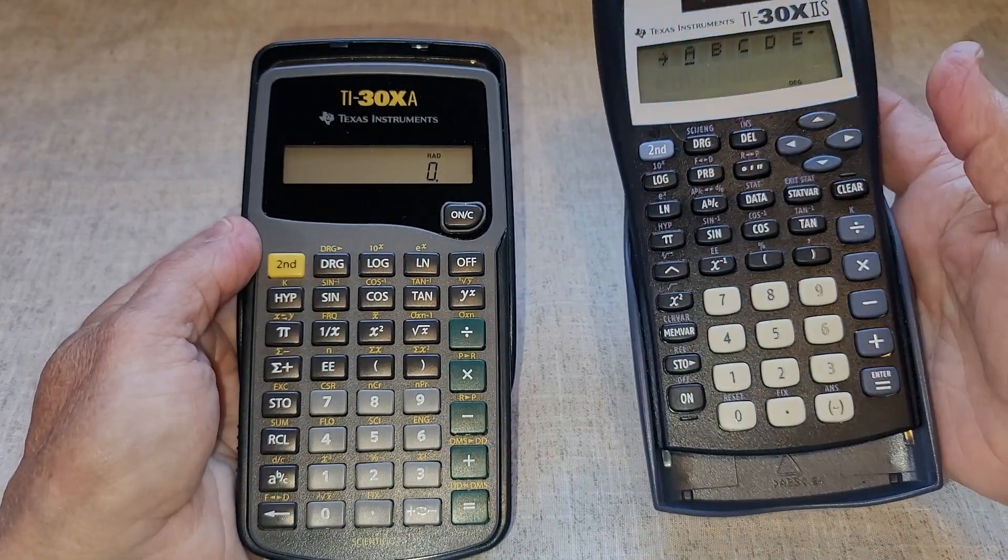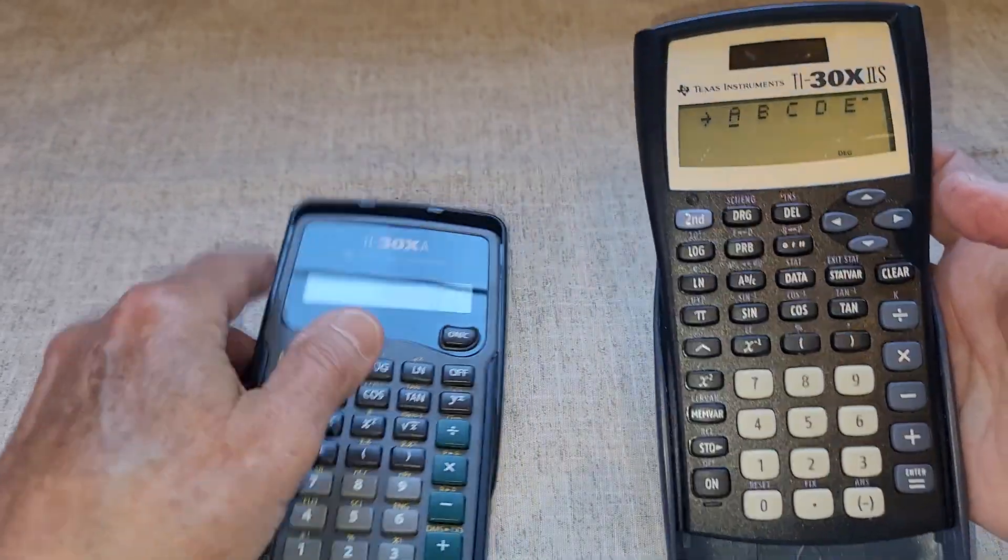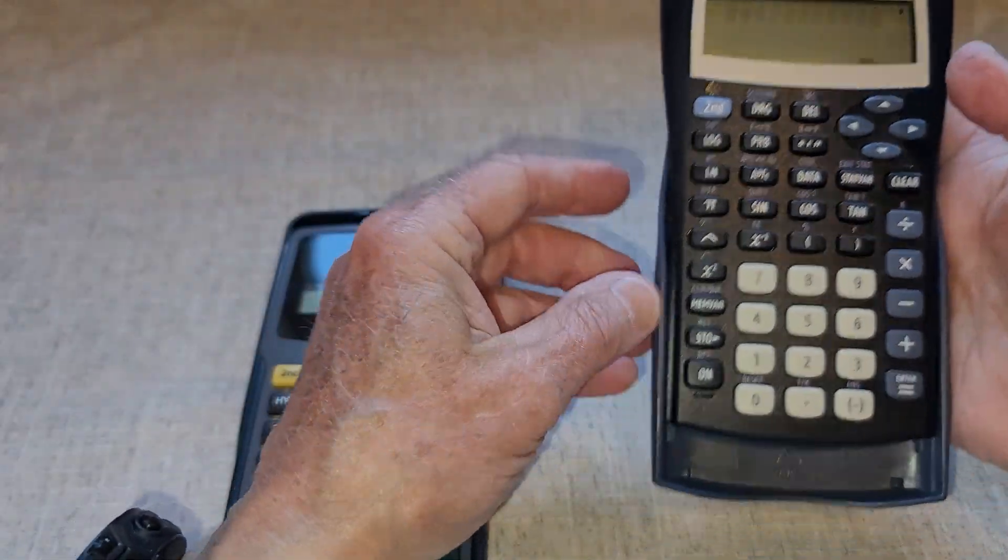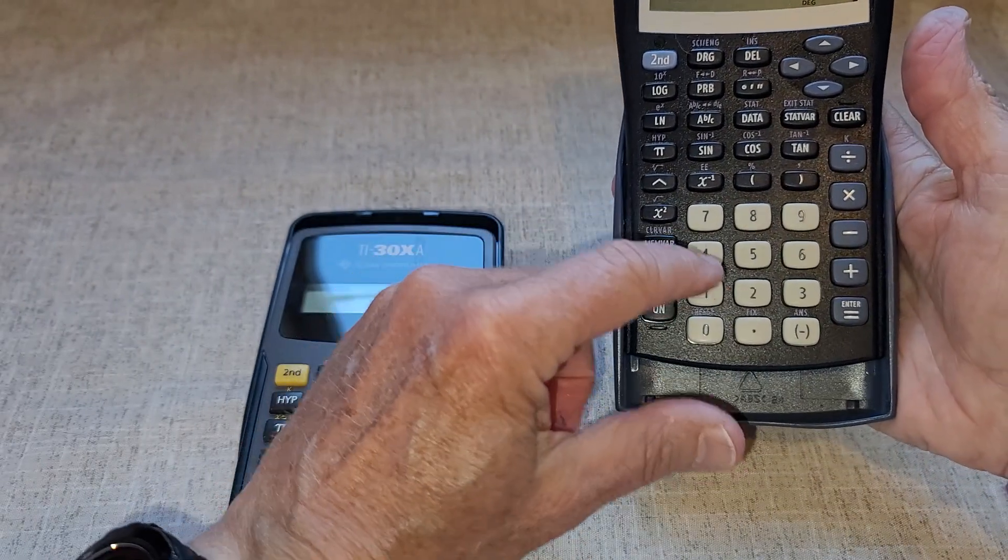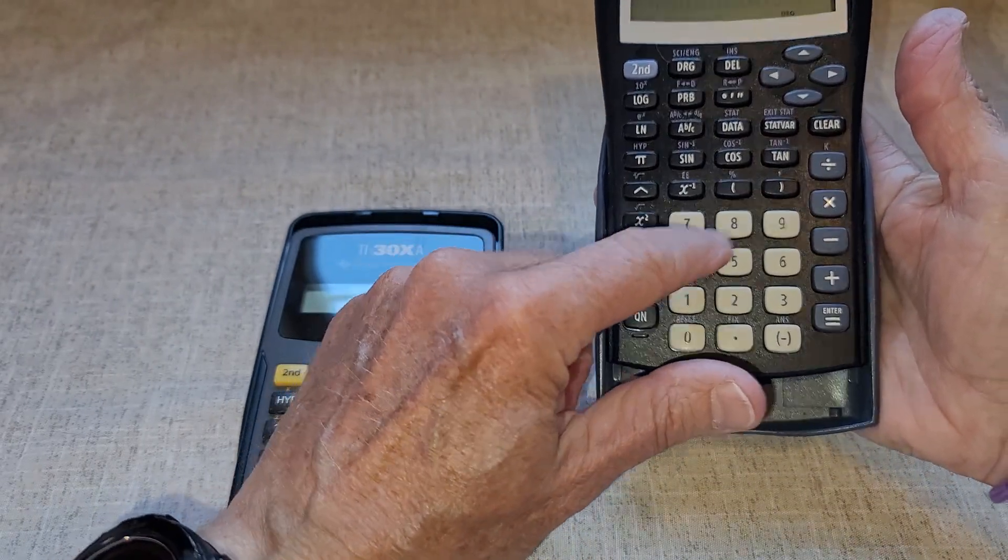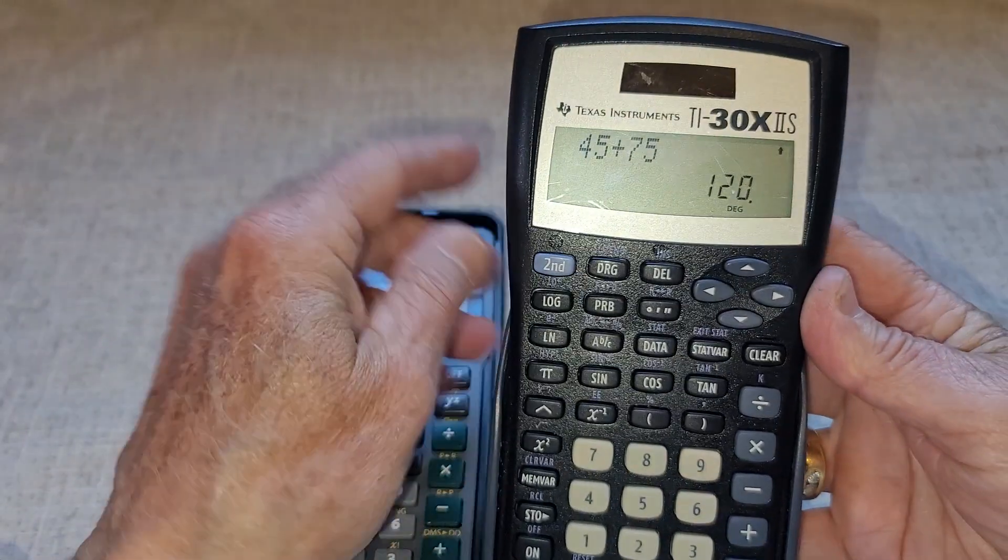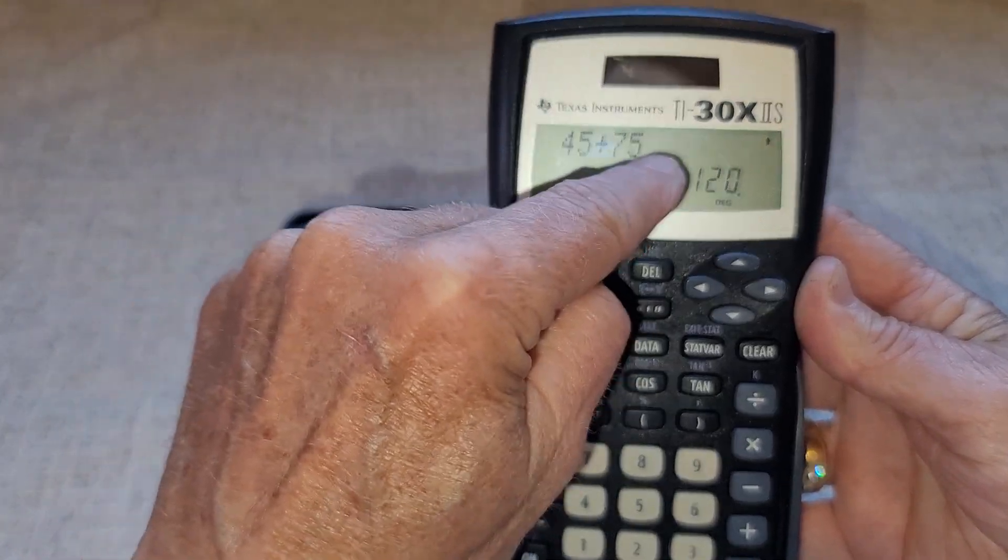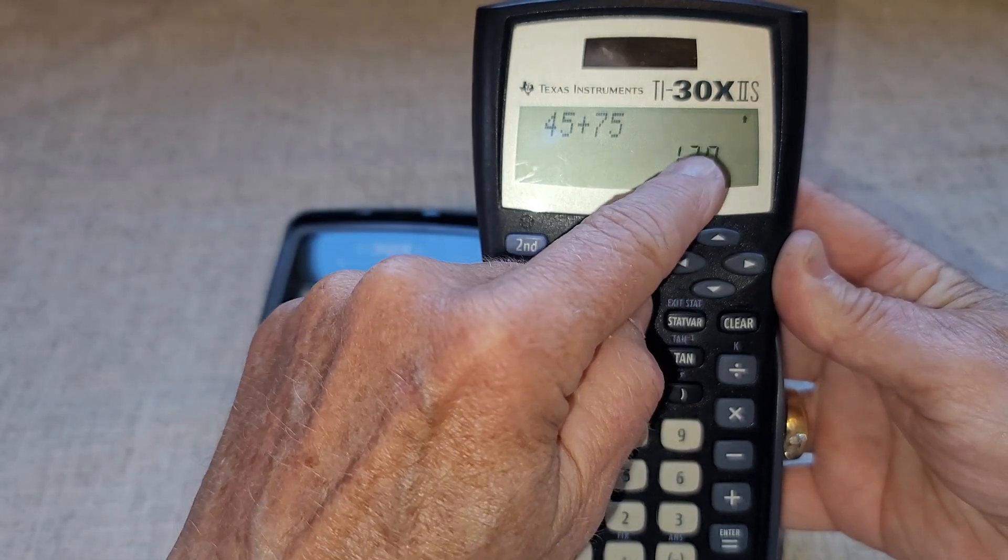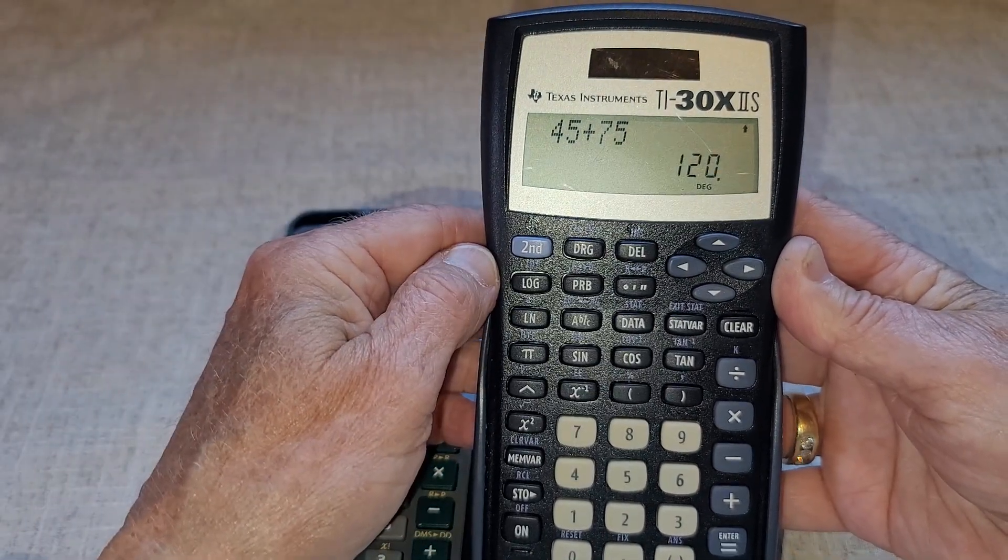The one on the right has a double line here, so if I am doing some addition, so 45 plus 75 equals, you can see here that it's on two lines. So you can see what numbers you entered, and you can also see what the result is.